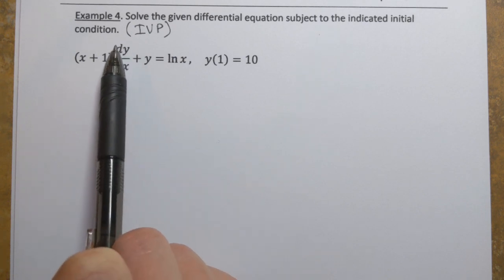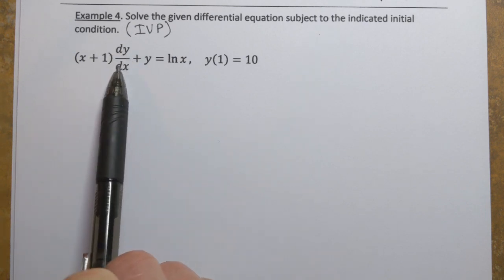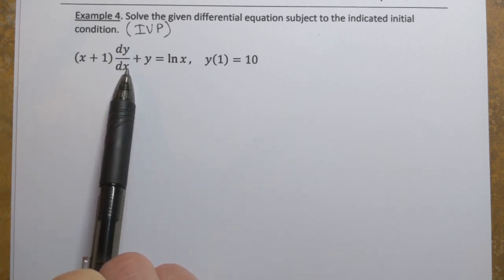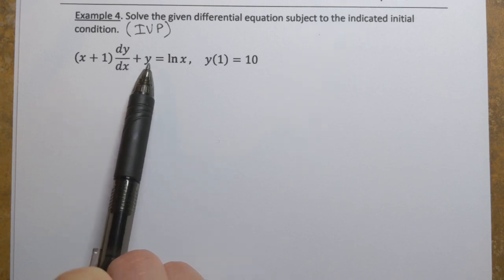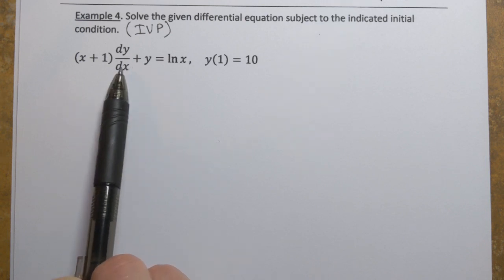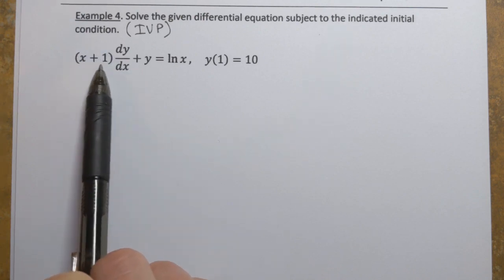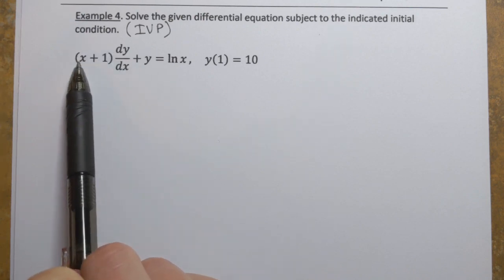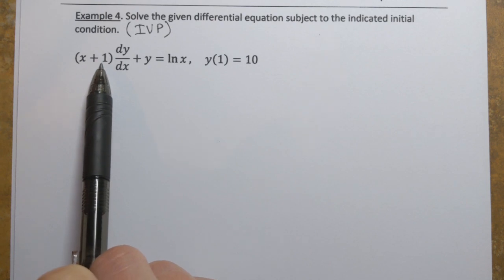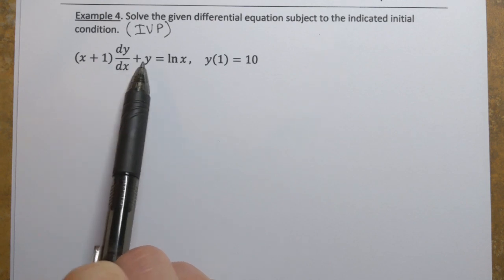It's first order because the highest derivative is the first derivative. And it's linear because it satisfies the two conditions: y and its derivative are raised to the first power, and all the coefficients are functions of x. So a coefficient here is x plus 1, a function of x, and the coefficient of y is just a constant.